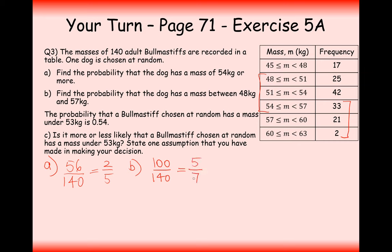Oh yeah, obviously, divided by 20. Okay, so the probability that a bull mastiff chosen at random has a mass under 53 kilograms is 0.54. So 53 or under is 0.54. Is it more or less likely that a bull mastiff chosen at random has a mass under 53 kilograms?